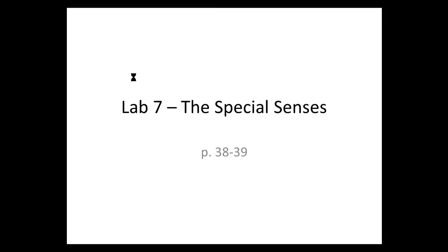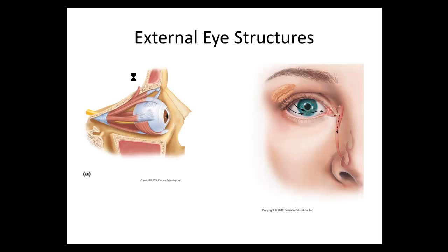Looking at our first objectives, we have the extrinsic eye muscles. The muscles found on the outside of the eye are the extrinsic eye muscles and they help to control our eye movement. Our eyes can draw the letter H with their movements — they can go back and forth, left and right, up and down, side to side.